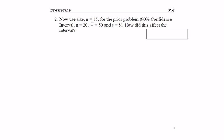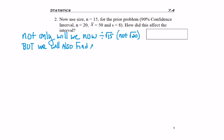First, we have to solve the problem. Something to notice: not only will we now divide by the square root of 15 (our new sample size, not 20), but we'll also have to find a new t_(α/2), a new critical value, because we have a new n.